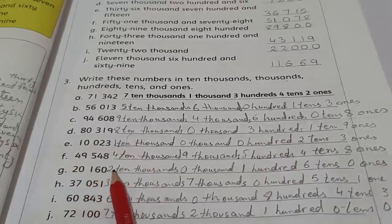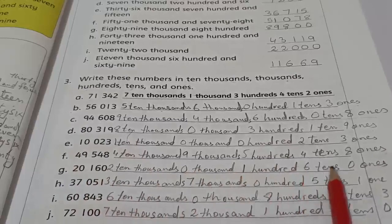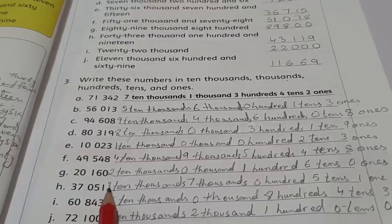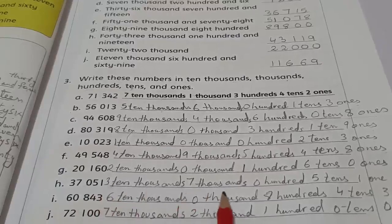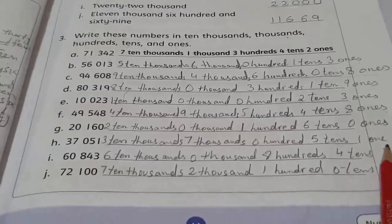G. 20160 - two ten thousands, zero thousands, one hundred, six tens, and zero ones. H. 37051 - three ten thousands, seven thousands, zero hundreds, five tens, and one one.